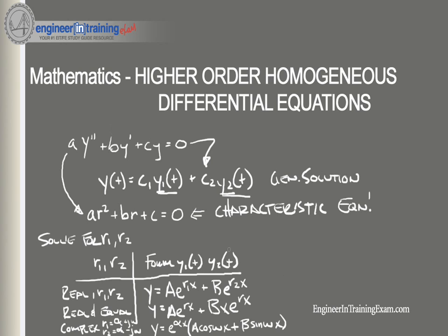This is a table to remember when solving higher-order homogeneous linear equations. Once we get our equation into characteristic form and find the roots: if they're real and distinct, y1 and y2 take the exponential form; if real and equal, they take the repeated root form; if complex, they take the cosine-sine form.